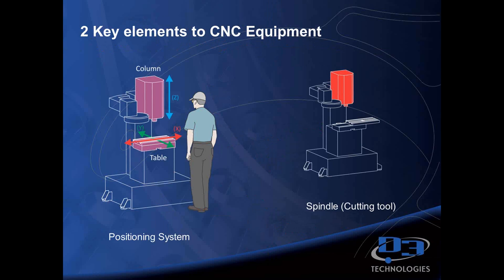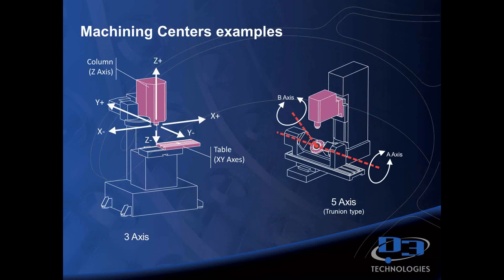A couple of key elements to CNC equipment: we have our spindle, which is where our cutting happens, and we have the positioning system. A lot of times it's on the table for the X and Y, but it can be in the Z as well. Here are some machining center examples for milling. We have our three-axis: X and Y positive and negative, and then Z positive and negative on the spindle or the column.